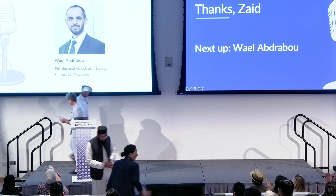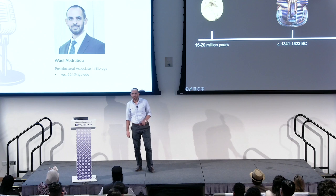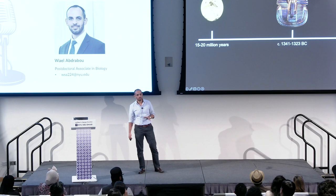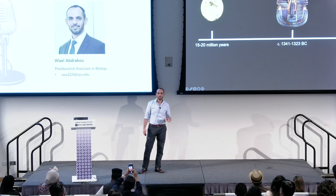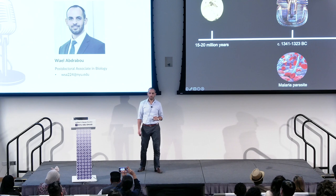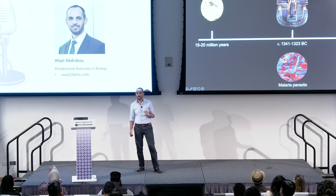Hi everyone. A mosquito fossil dated millions of years ago, an Egyptian king who ruled Egypt 4,000 years ago, and the remains of a human who passed away during the Roman Empire — what is common between all of them? A microscopic organism found in their body, the culprit behind one of the oldest diseases mankind has ever faced: malaria.